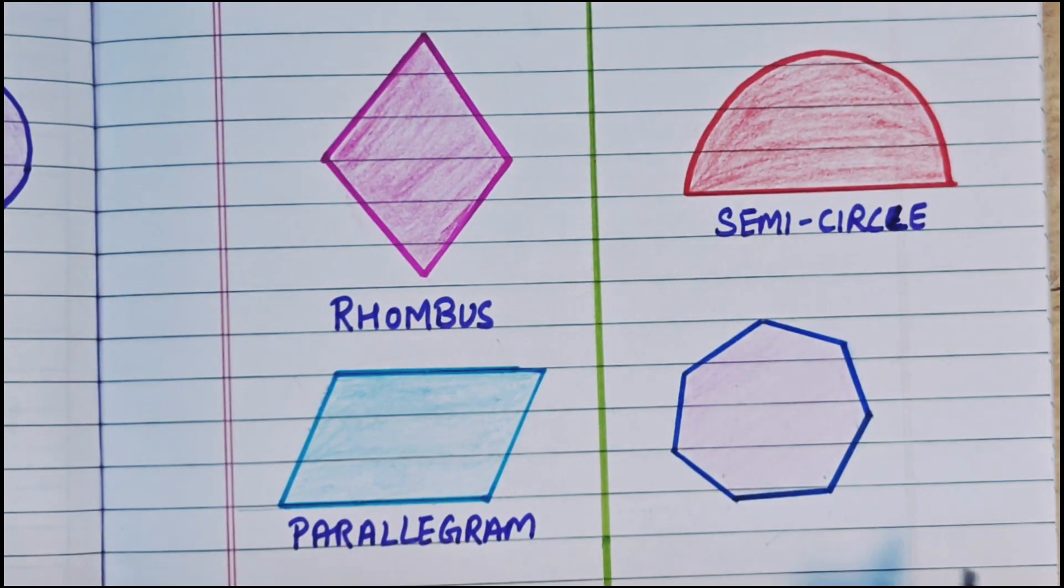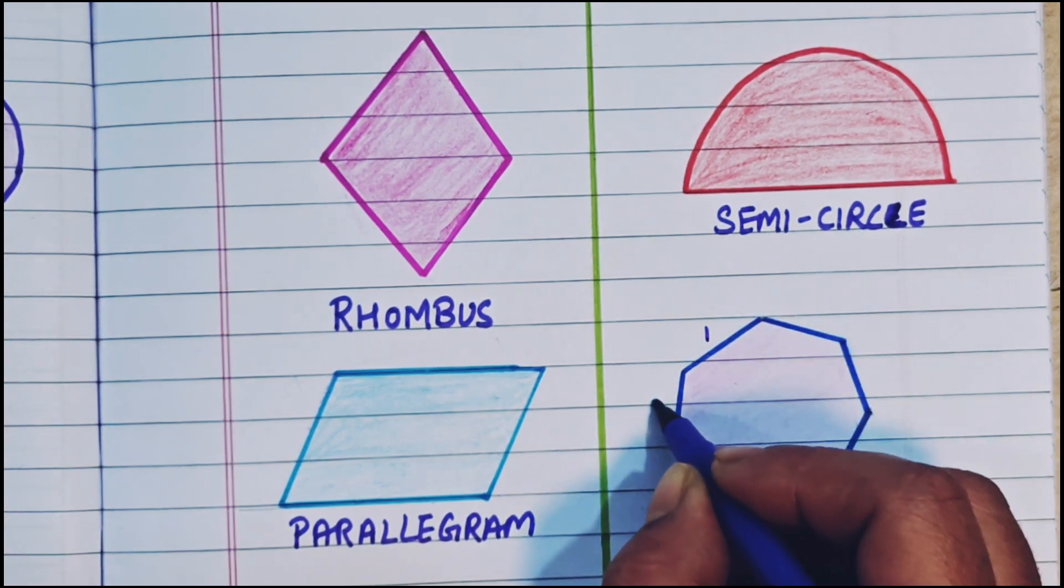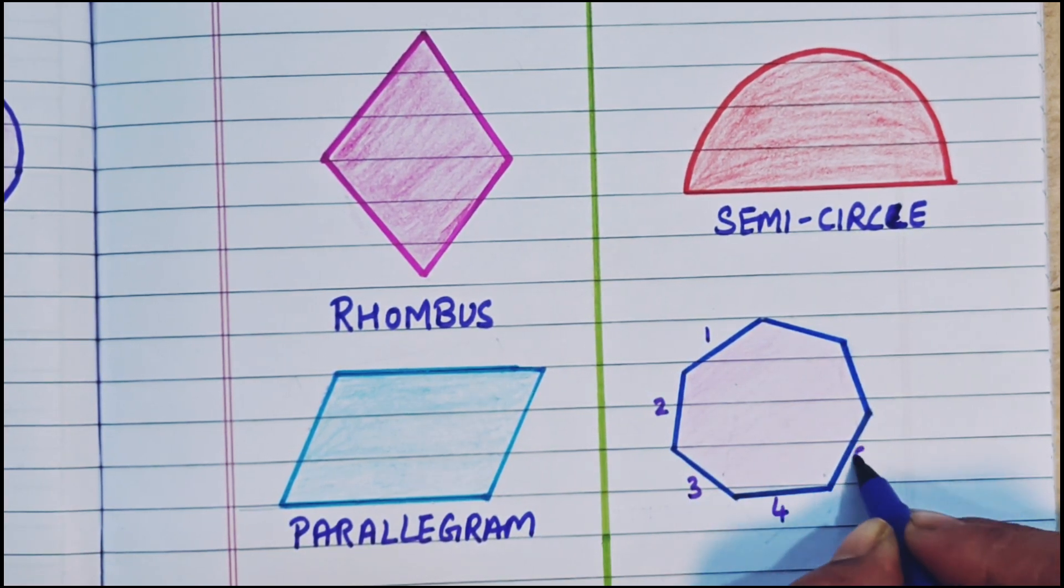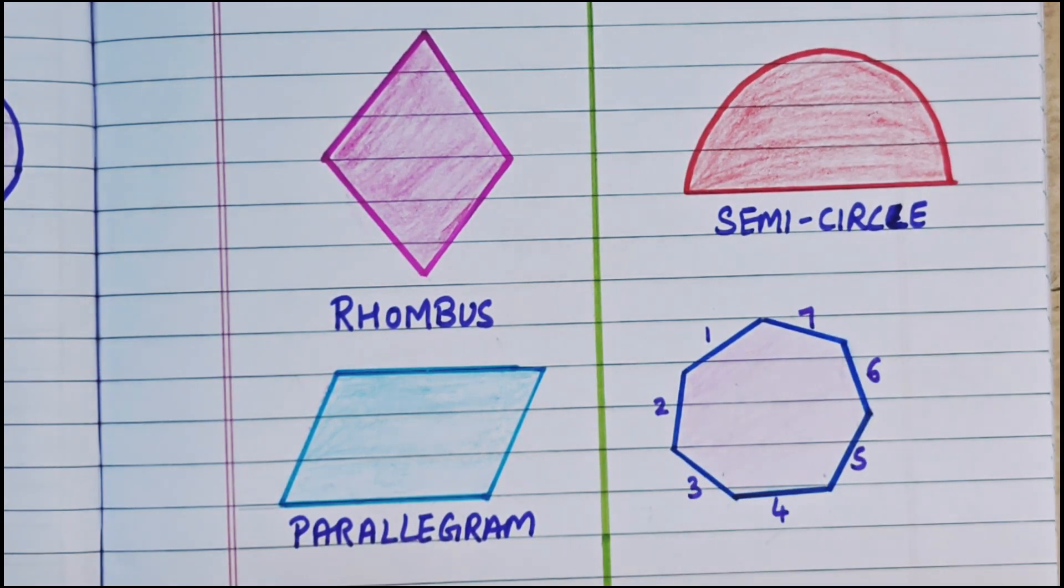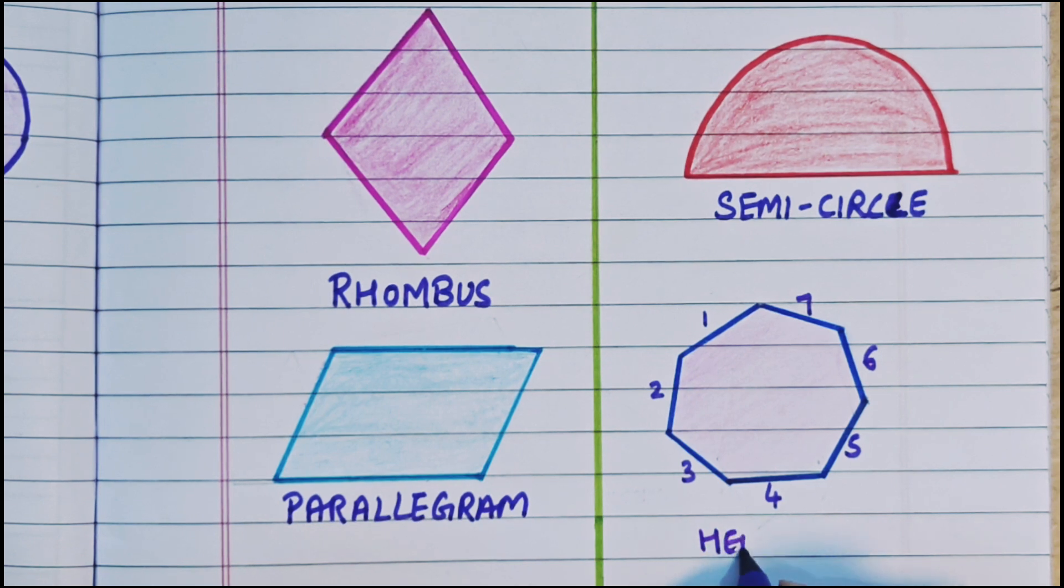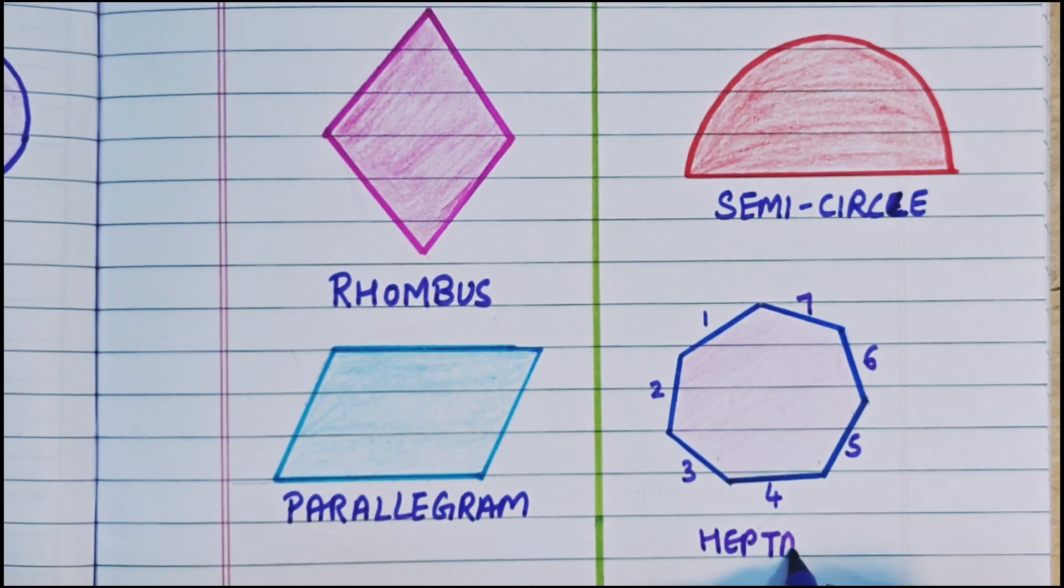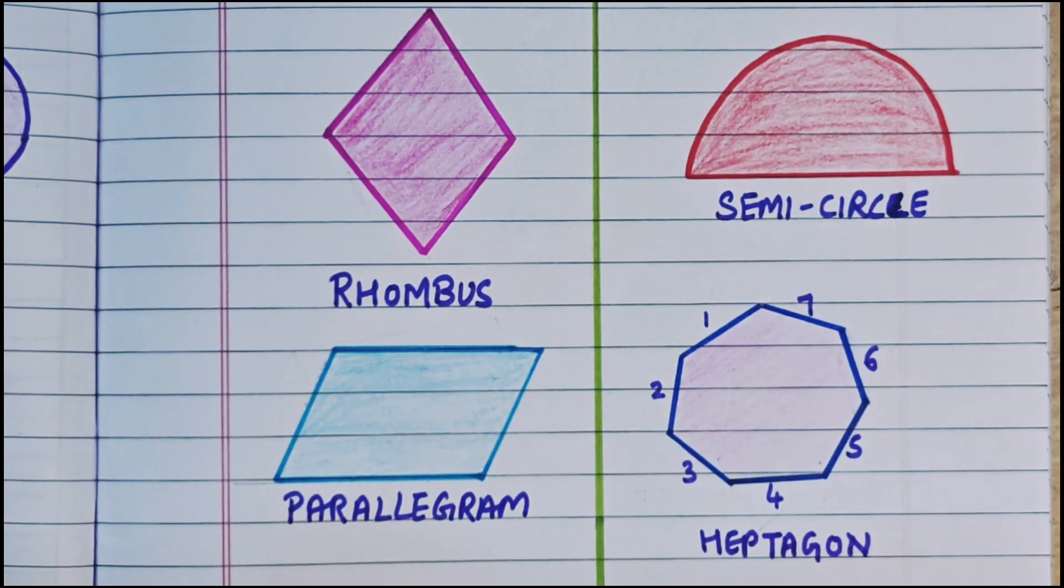Now next shape. It is having how many sides? Let's count. 1, 2, 3, 4, 5, 6, 7. 7 sides. It is known as a heptagon. H-E-P-T-A-G-O-N. It is having 7 sides, so it is known as a heptagon.